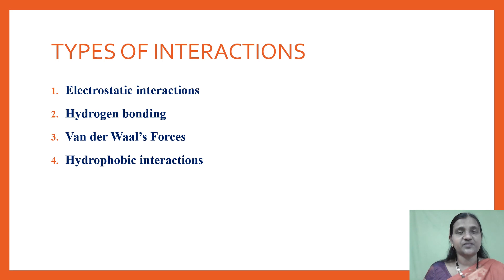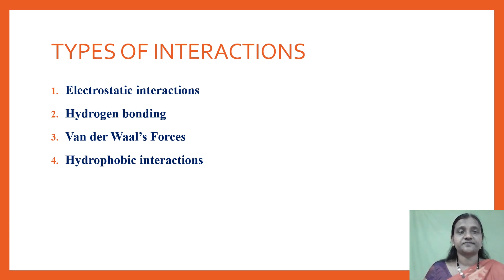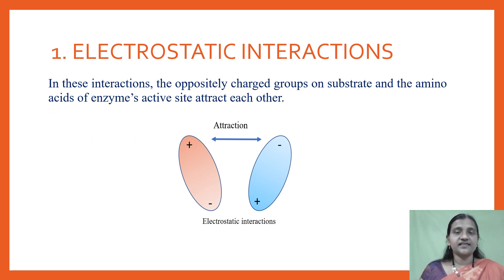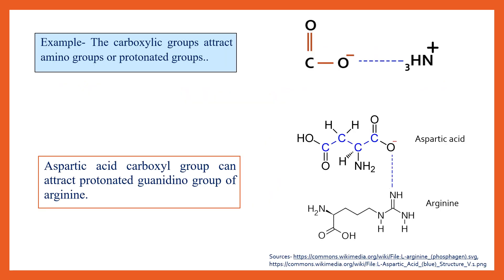There are four different types of interactions between enzyme and substrate. The first is electrostatic interaction, second is hydrogen bonding, third is Van der Waal forces, and the fourth is hydrophobic interactions. Electrostatic interactions are interactions between oppositely charged groups — for example, carboxyl groups are attracted towards amino groups. If the active site has a negative group, it will attract a positive group on the substrate, thereby leading to enzyme-substrate complex formation.